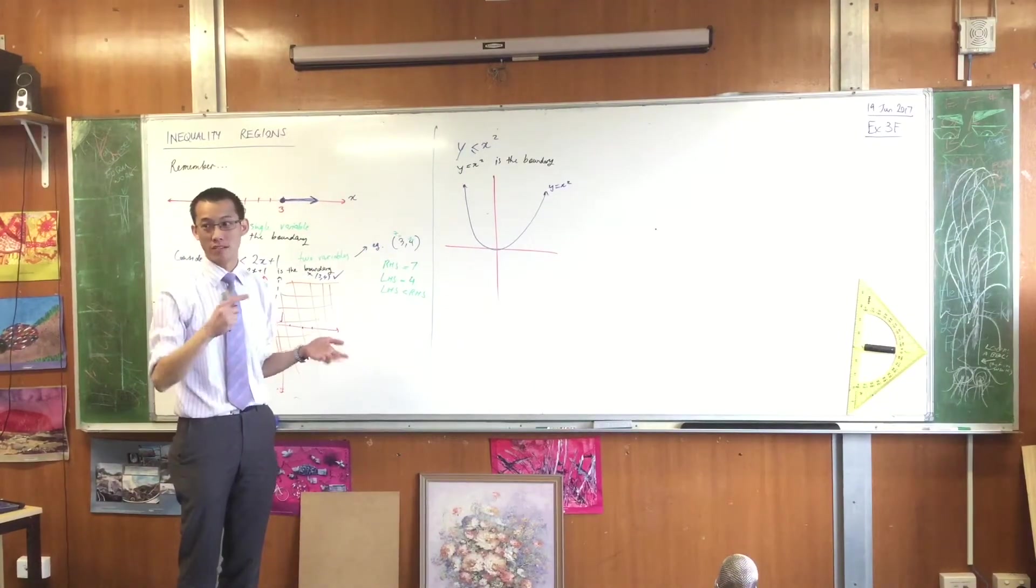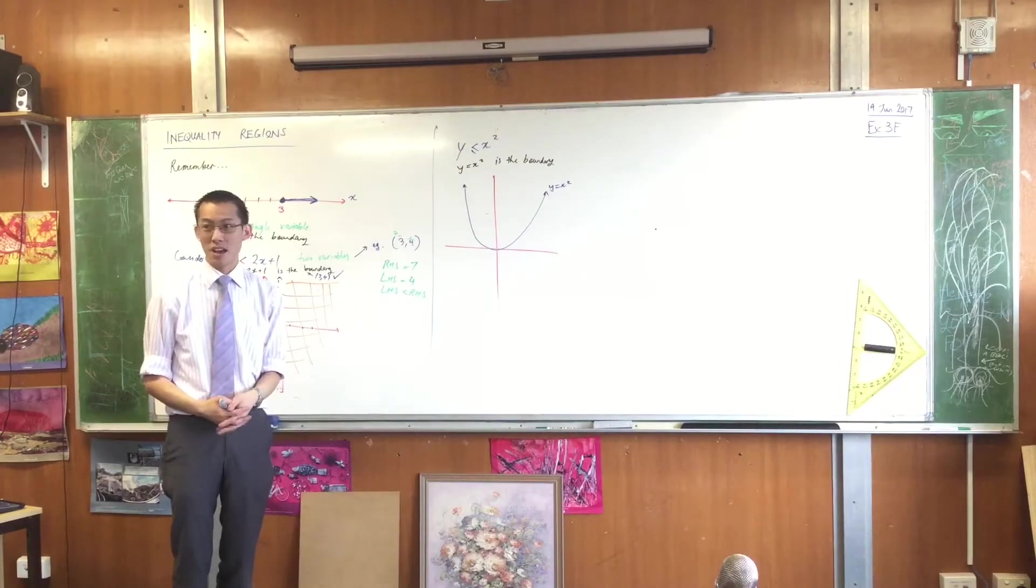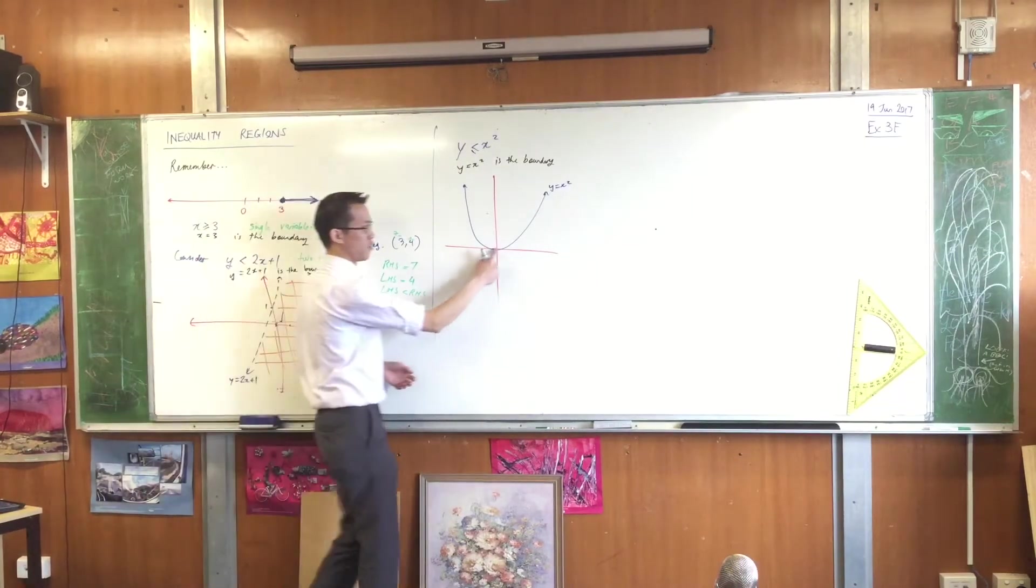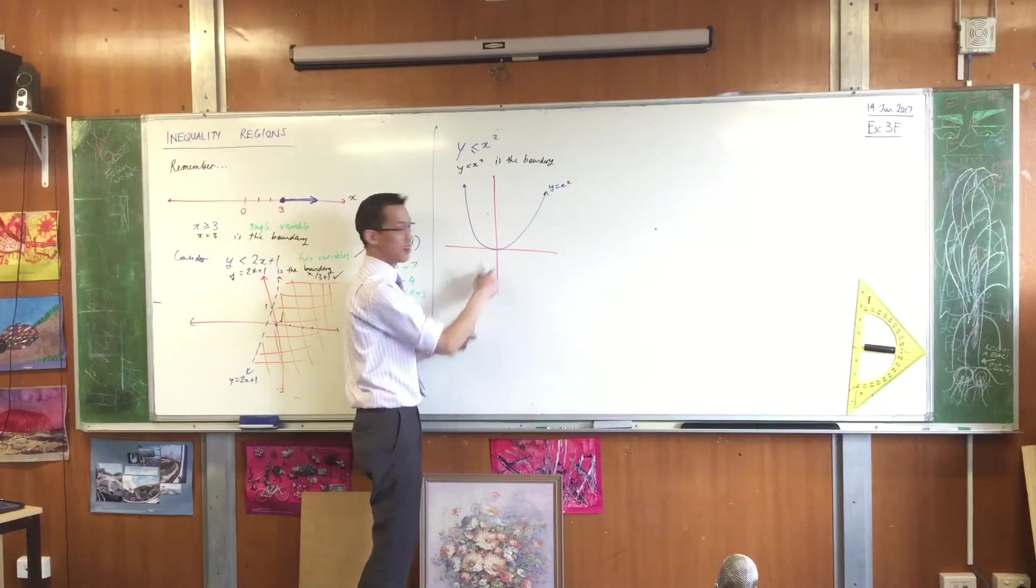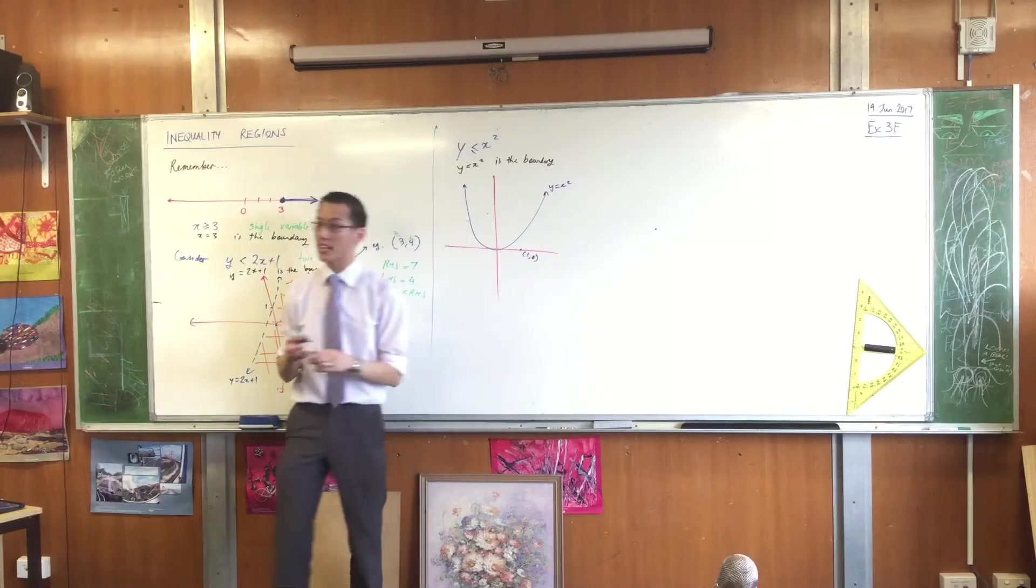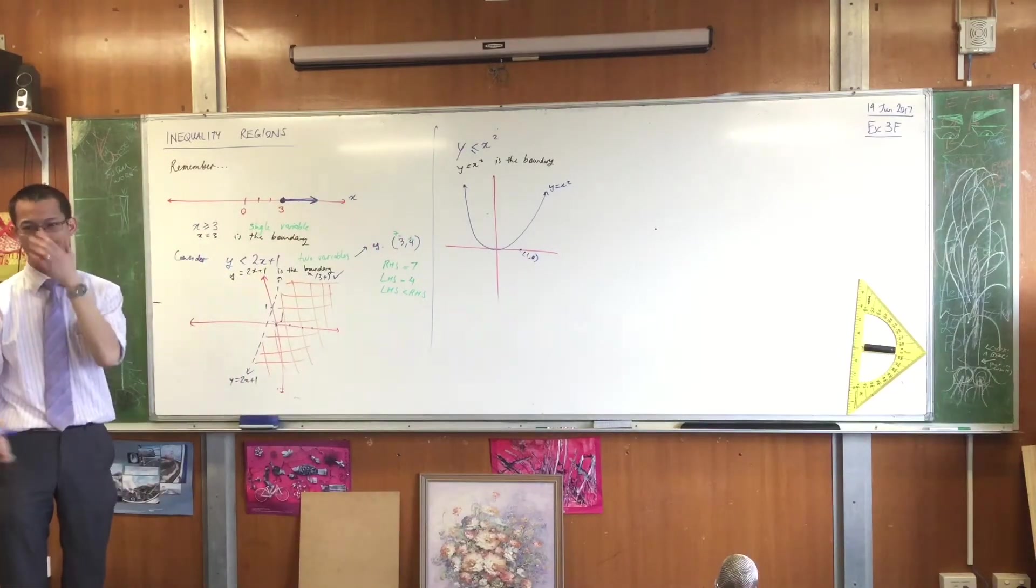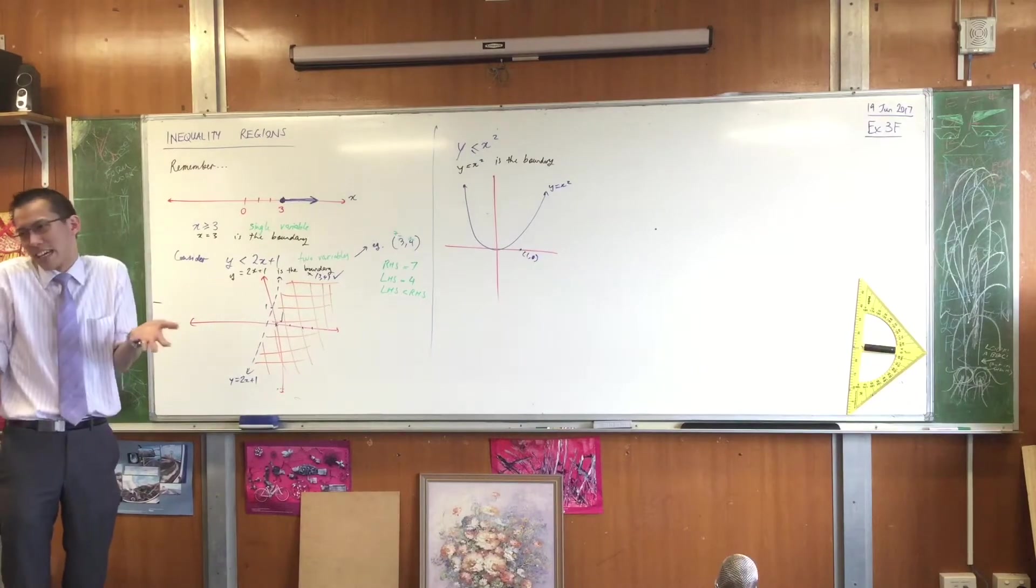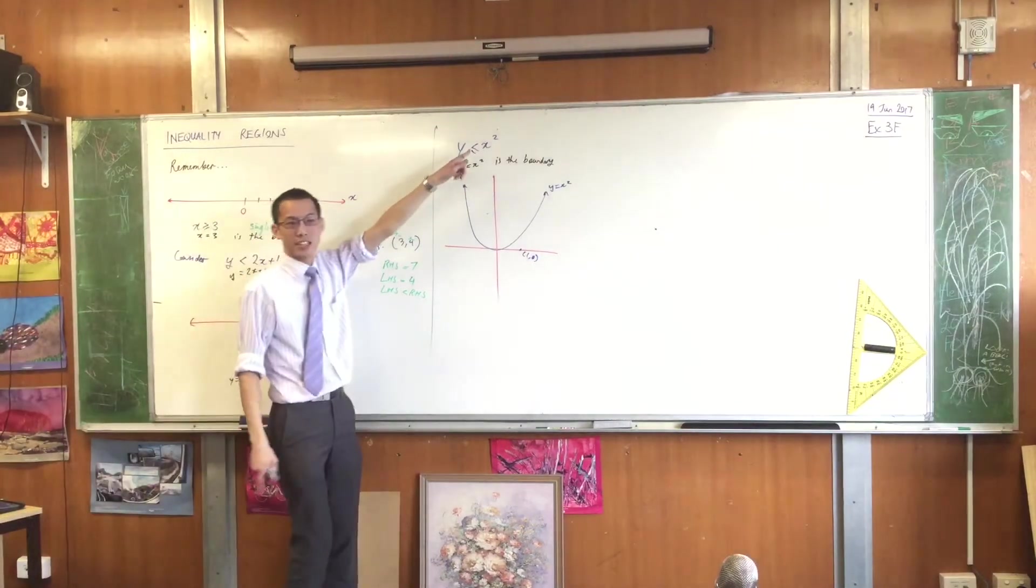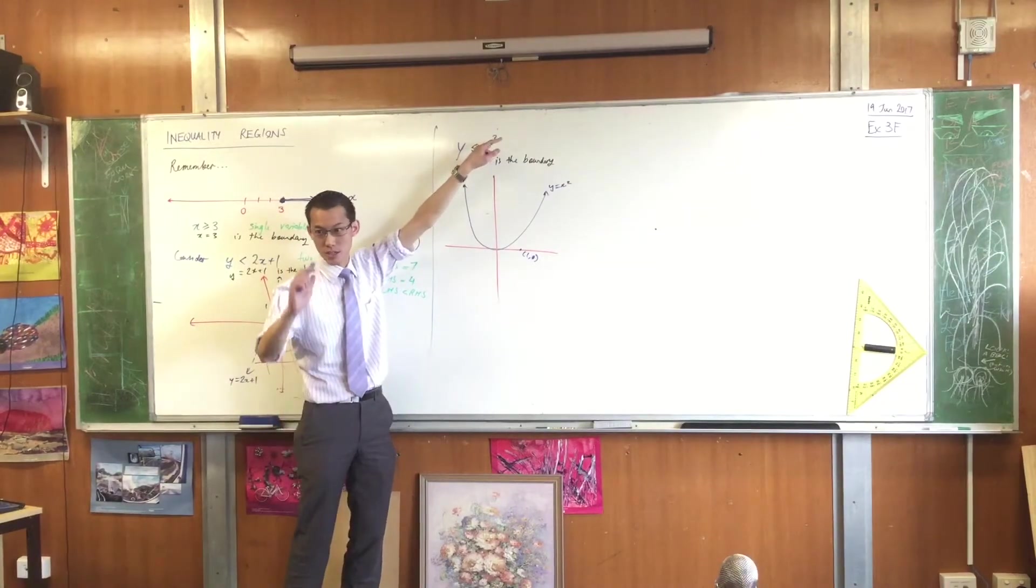So instead we need to pick a point that's clearly on one side. So what would you like me to pick? How about one zero? One zero. This point here. Just like zero, one's also pretty nice to evaluate in lots of ways and I also try and avoid negatives wherever I can. So does this sum, does it work? Yes. Is zero less than or equal to one squared? And the answer is yes.